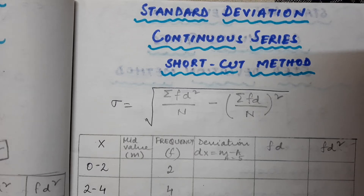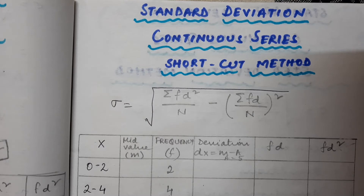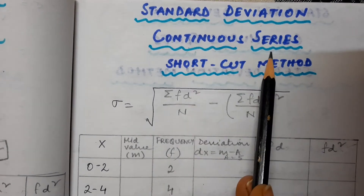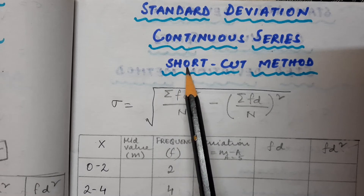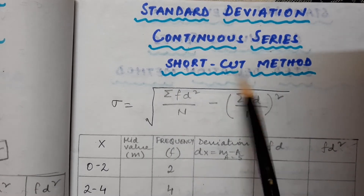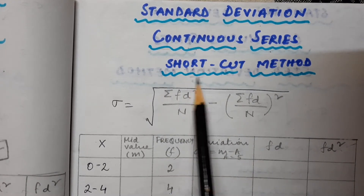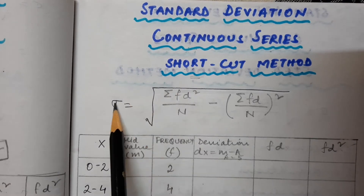Namasheva students, we will be continuing with our chapter on measures of dispersion. In our previous class we started with standard deviation for continuous series and completed the direct method. Now we will be doing standard deviation for continuous series using the shortcut method.